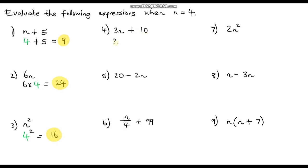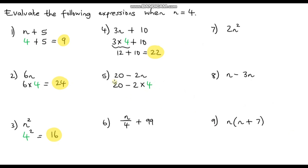Question 4: 3n plus 10. So 3 times n becomes 3 times 4. We do the multiplication first: 3 times 4 is 12, then 12 plus 10 is 22. Question 5: 20 minus 2n. We substitute to get 20 minus 2 times 4. Orders of operation — multiplication first: 2 times 4 is 8, so 20 minus 8 is 12. Question 6: n divided by 4 plus 99. n is 4, so it's 4 divided by 4, which is 1, then 1 plus 99 is 100.